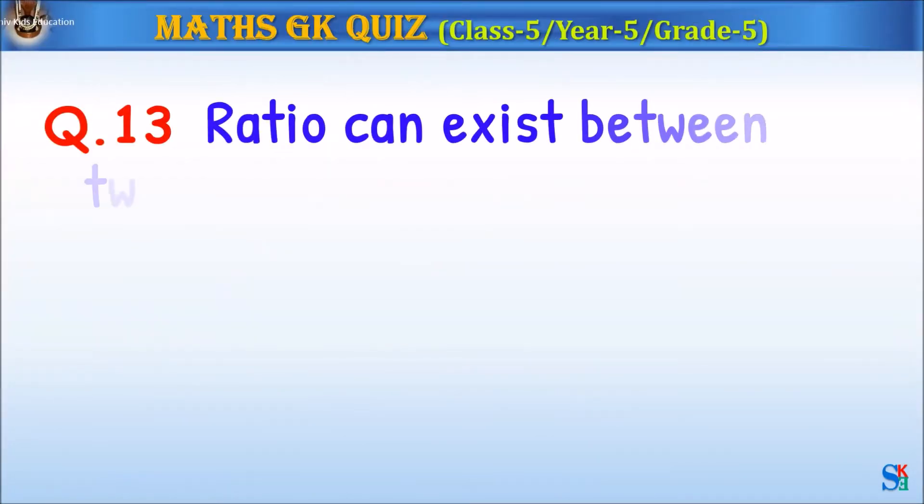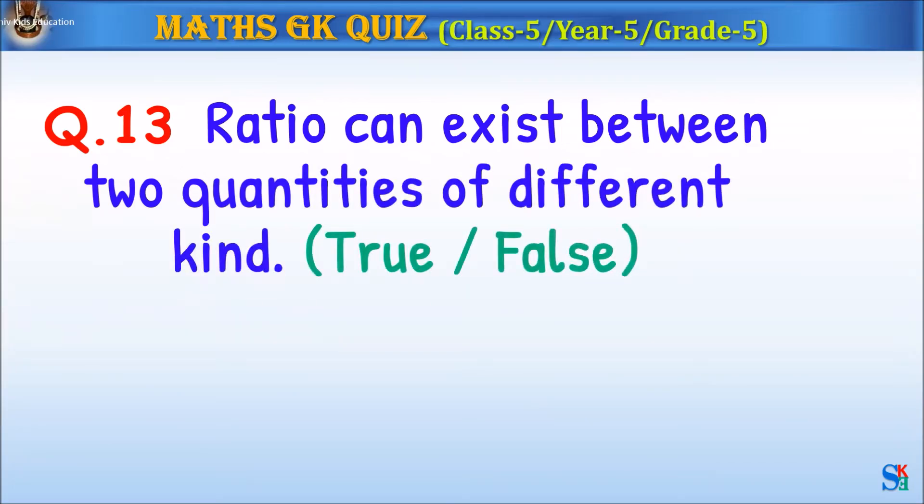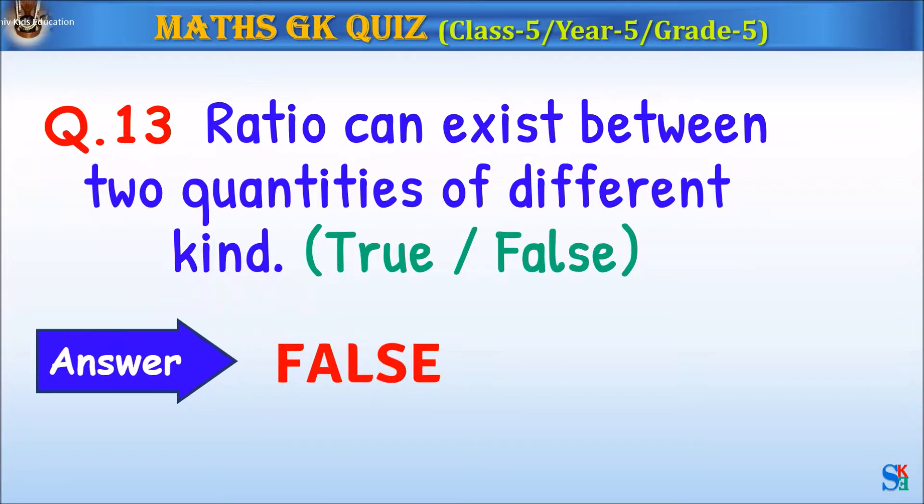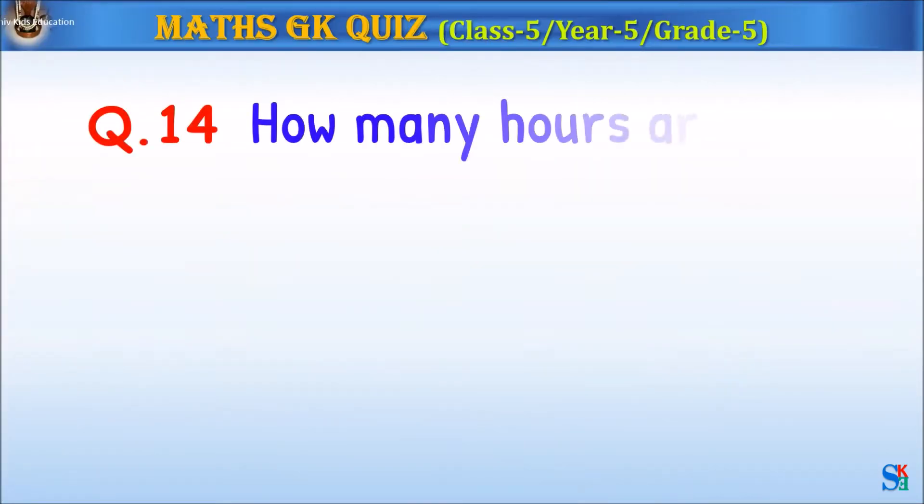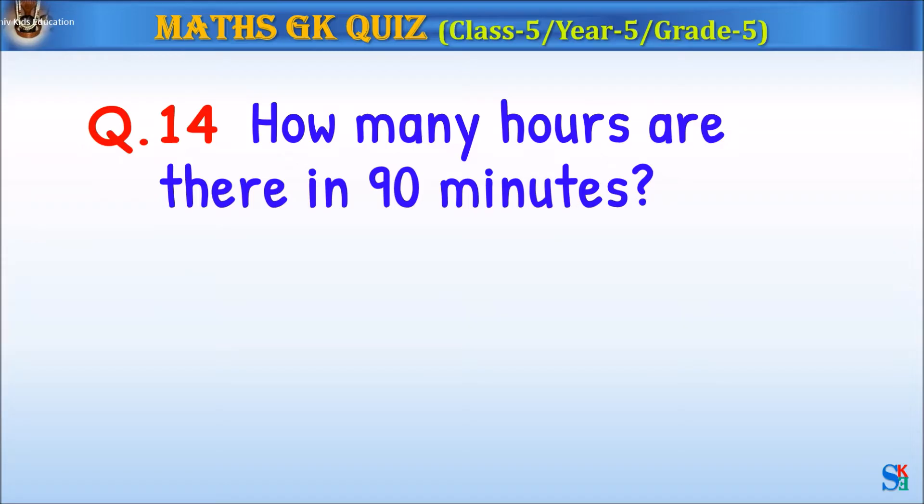Question 13: Ratio can exist between two quantities of different kind, true or false? The answer is false. Question 14: How many hours are there in 90 minutes?